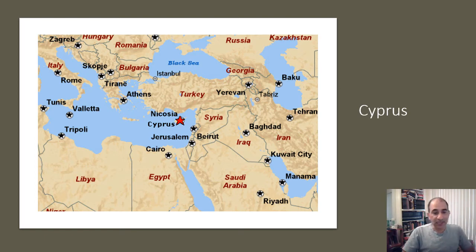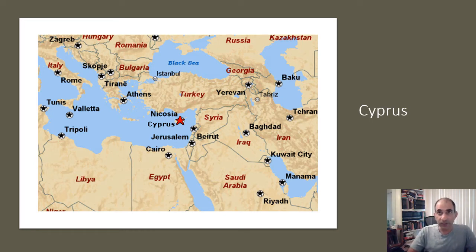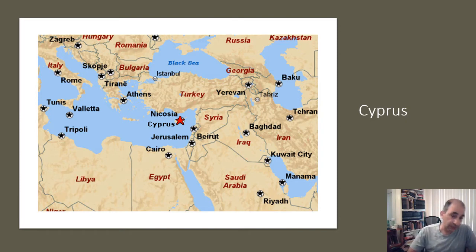Cyprus is an island that's changed hands many times in history. In the 1800s it was controlled by the British. The question is who's living in Cyprus — primarily a combination of Greeks and Turks. The majority of people who lived in Cyprus were actually Greeks, about 70-80 percent of the population, who are Christians. And there were Turks, who of course are Muslims.